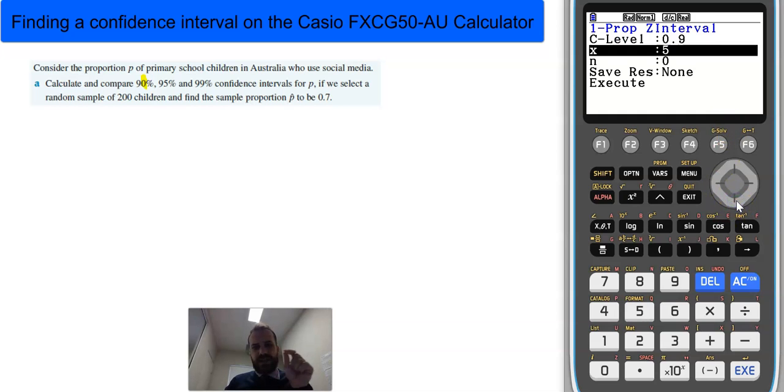Now, what about the X and the N? What does that represent? Well, N is sample size. So, let's fill that in first, 200. Now, what is X? X is the number of people in your sample size who, in this case, use social media.